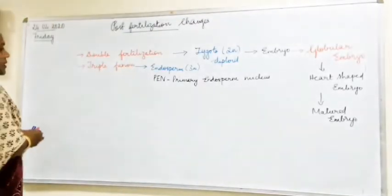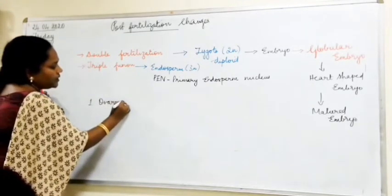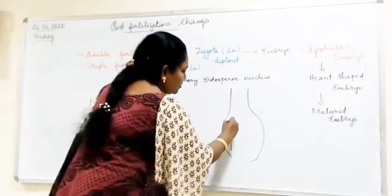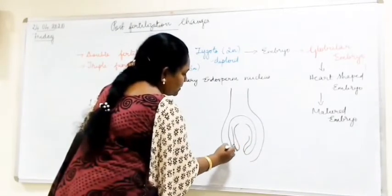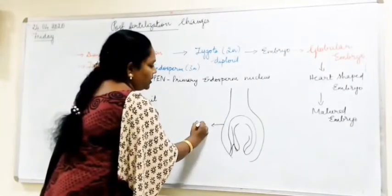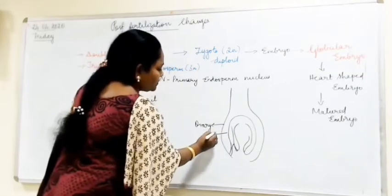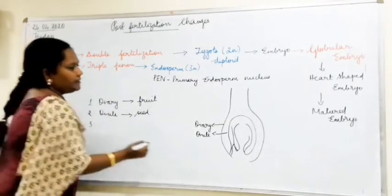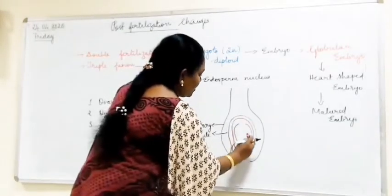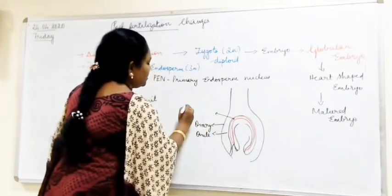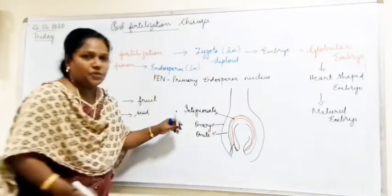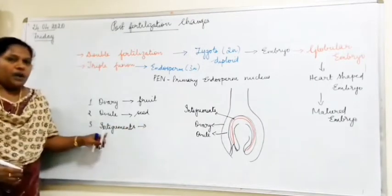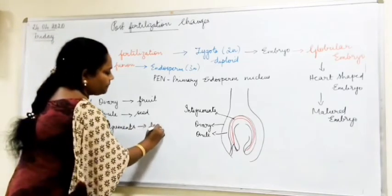Now, what are the post-fertilization changes? The ovary develops into the fruit. Inside the ovary you have the ovule, micropyle, funicle and all those structures. The ovule develops into the seed. The integuments — the outer integument and the inner integument — develop into the seed coat. The outer integument develops into the testa and the inner integument develops into the tegmen.